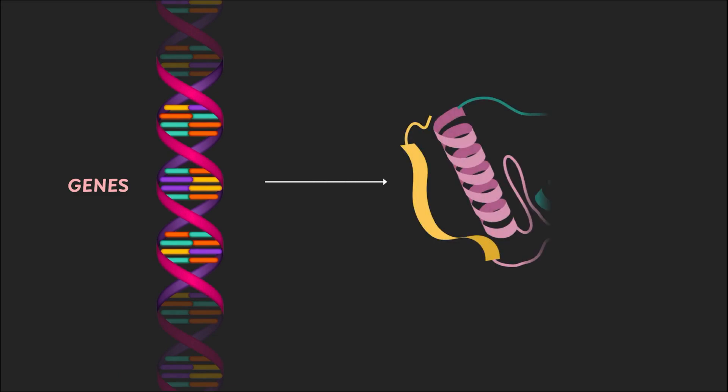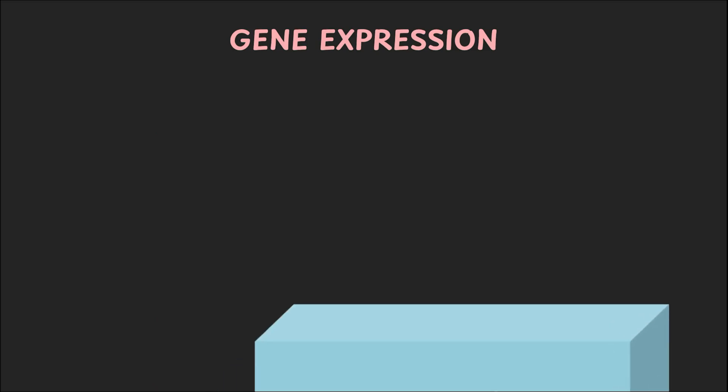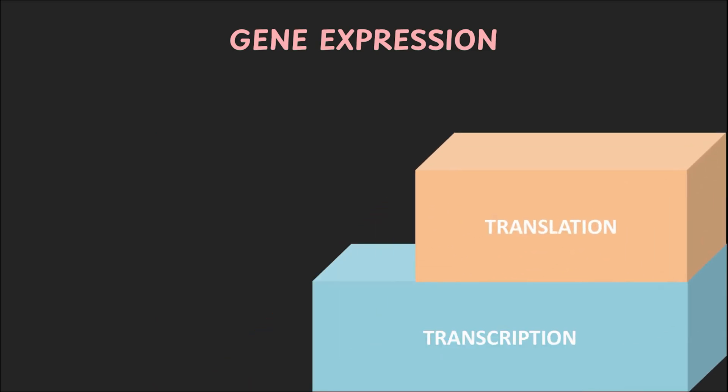Now for DNA to be the ultimate blueprint, it needs to be able to use its genes and make proteins from it. And how do we form proteins from genes? We make it in a process called gene expression. Gene expression involves two steps, transcription and translation.